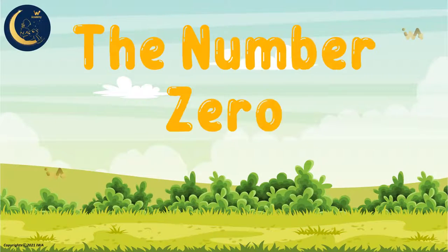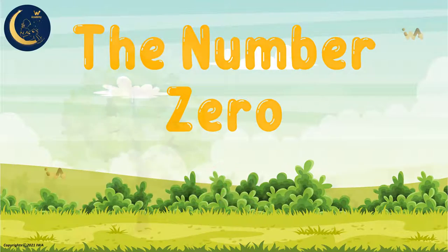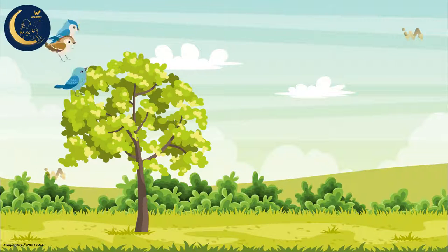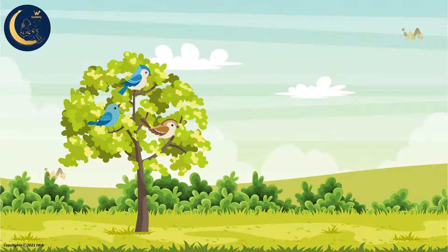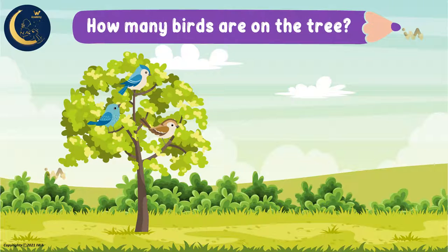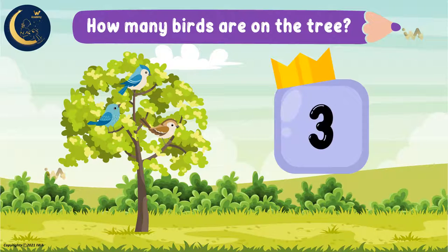The number zero. Look at the beautiful birds on the tree. Can you tell me how many birds are on the tree? Well done. There are three birds. One, two, three. So the number of birds is three.